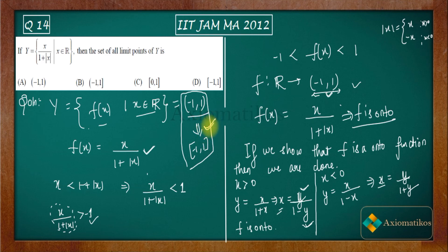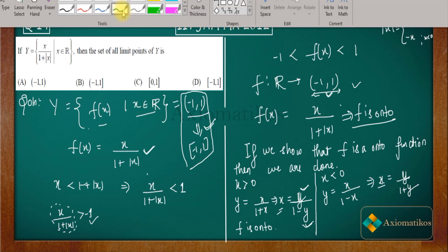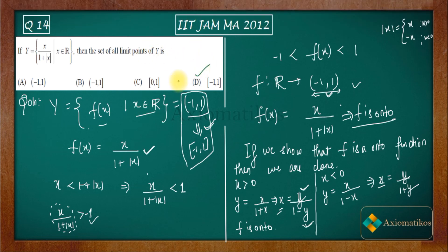If you don't know this, look at your analysis book and the definition of a limit point. It is easy to show that the derived set of an open interval (a, b) is the closed interval [a, b]. So from here, our answer is D — the set of all limit points of Y is [-1, 1]. Options A, B, and C are all incorrect. Thank you.